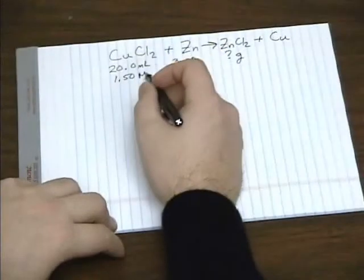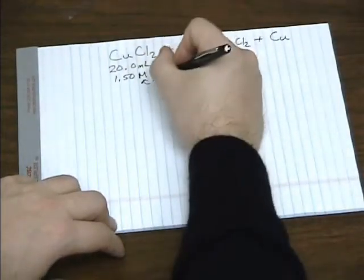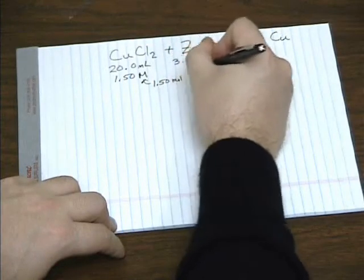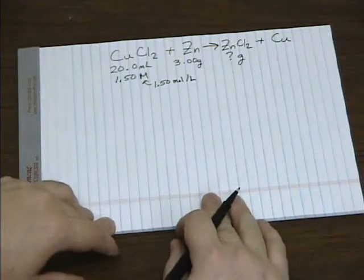Now in a previous video, we introduced the molarity term. Remember molarity is another way to say moles per liter. So 1.5 molar is 1.5 moles per liter.